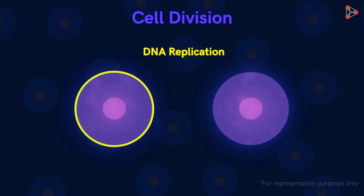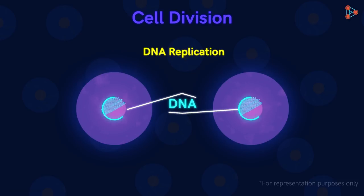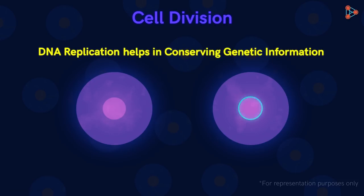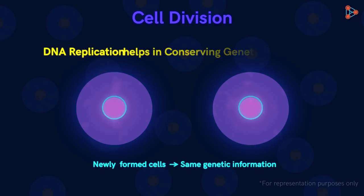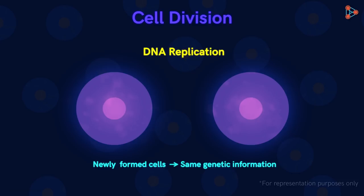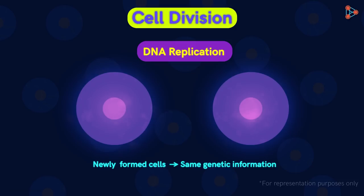With this, the cell is able to make a copy of itself. We know that DNA encodes everything. So when the cell is about to divide, the replication of DNA helps in conserving the genetic information. As a result, the newly formed cells carry the same genetic information. Thus, in order to have similar or identical cells, the process of DNA replication and cell division are extremely important.